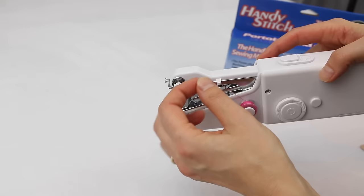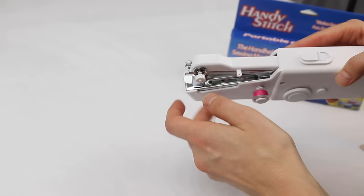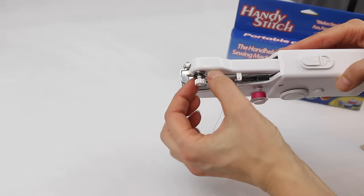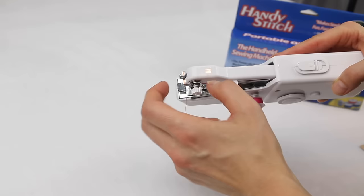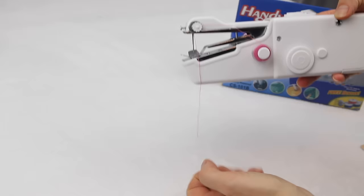And then the next thread guide is actually the tension discs here. Just on this little knob here you have two little discs. The thread needs to sit in between those two little discs and just hang down like so.